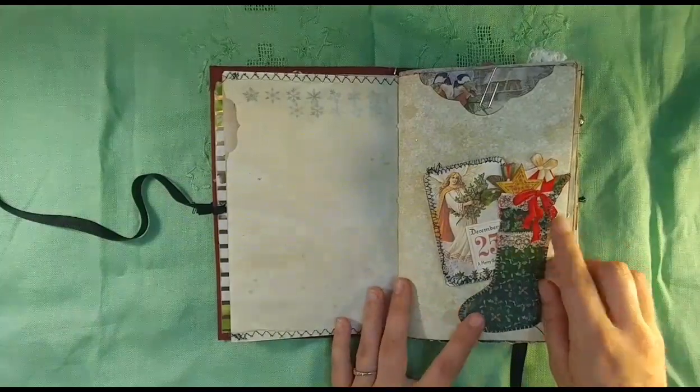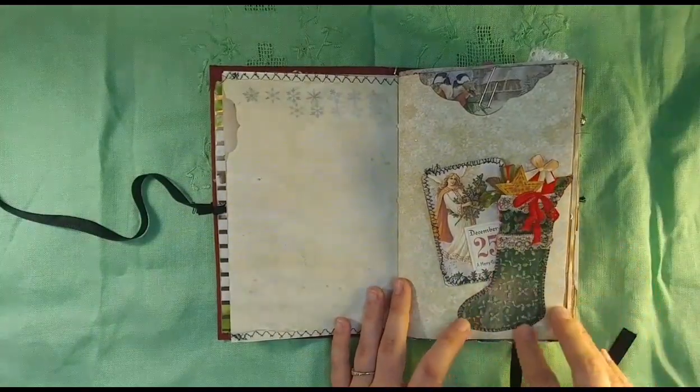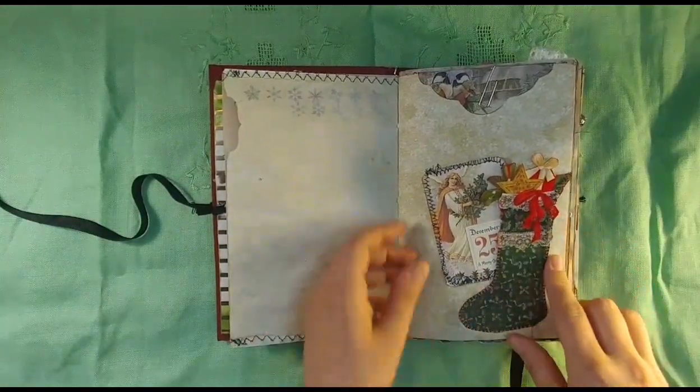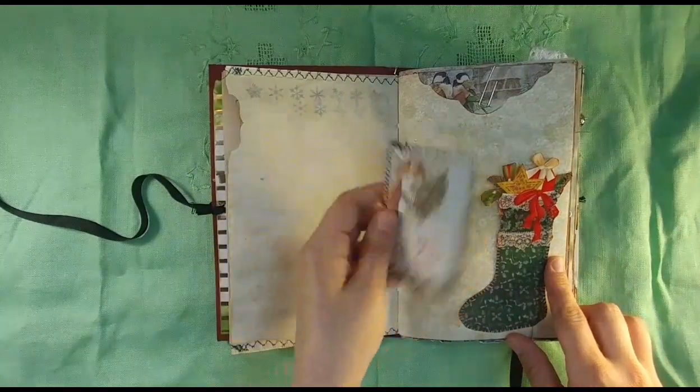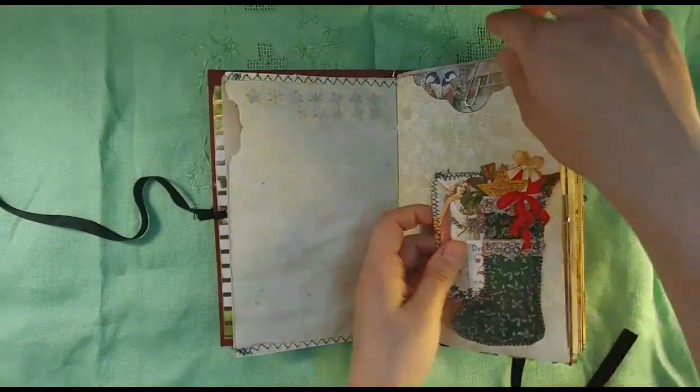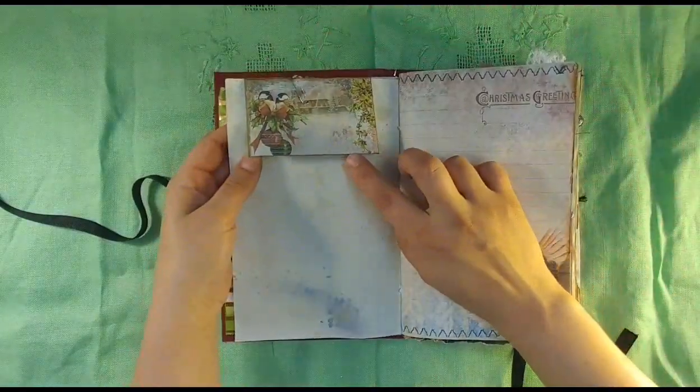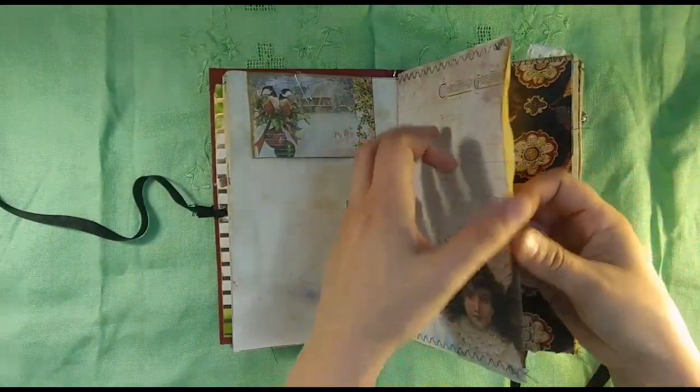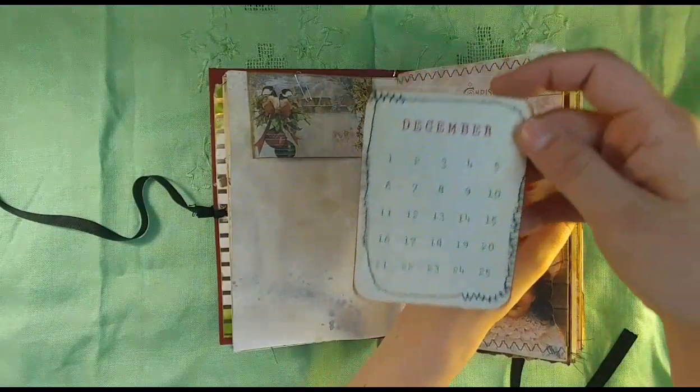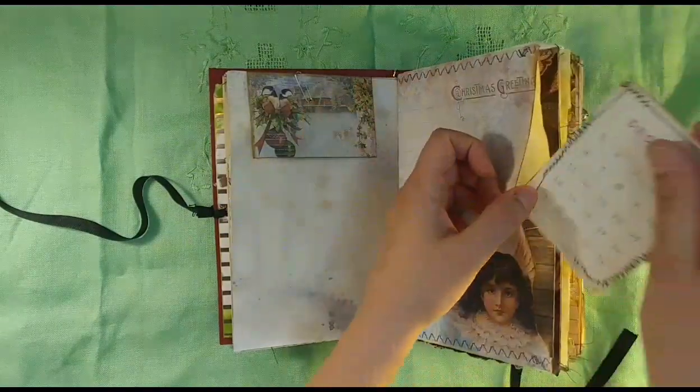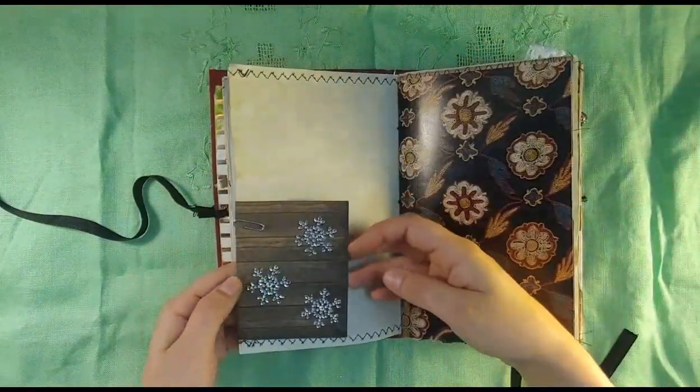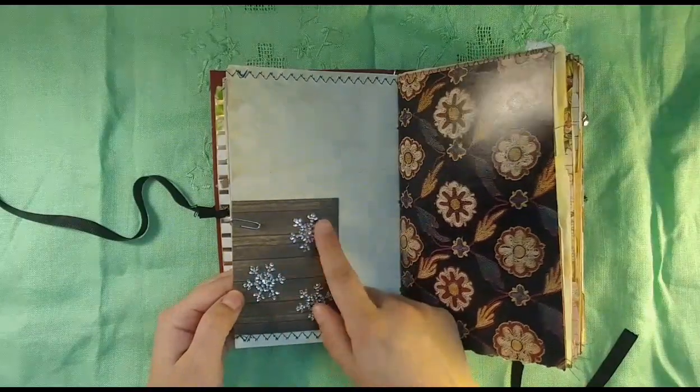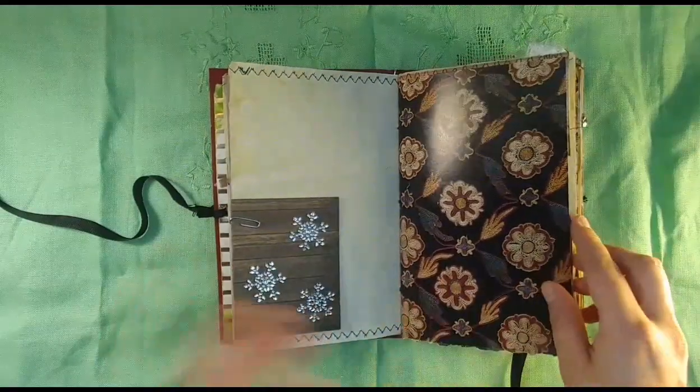Some snowflake washi, and this stocking is cut out from a Christmas card. I stitched here and made it a tuck spot for one of her journaling cards with room to write on the back. I clipped on one of her little envelopes here, and in this pocket there's a calendar journaling card and another little journaling card with some snowflake.